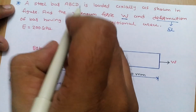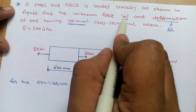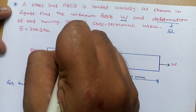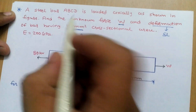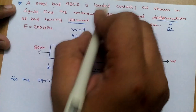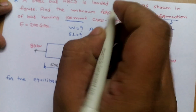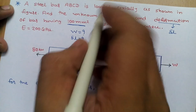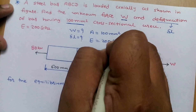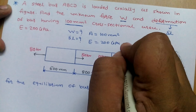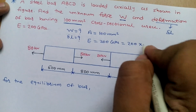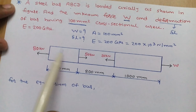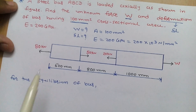First we write the given data. Unknown force W and deformation of bar, delta L, are to be found. Uniform cross-sectional area A is equal to 100 mm square, and modulus of elasticity E is equal to 200 GPa, which means 200 into 10 raised to 3 Newton per mm square.